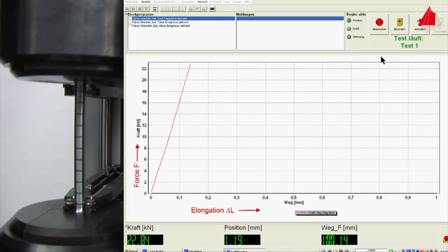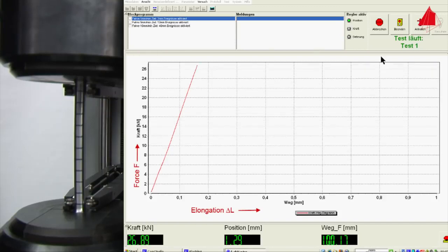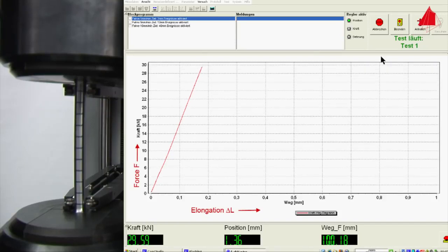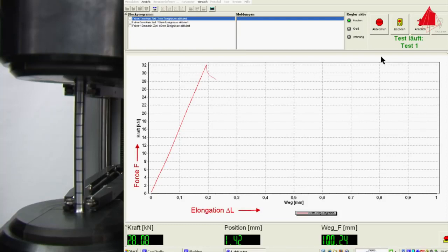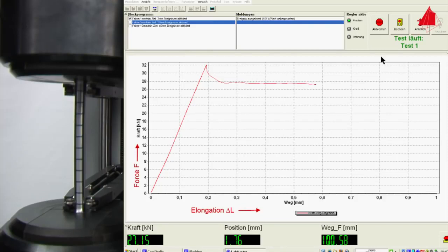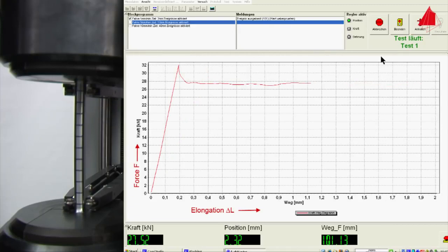In materials with yield point phenomenon, the end of the elastic area can be seen clearly. The plastic deformation starts abruptly and is accompanied by a sudden drop of force. If the test piece were to be unloaded now, it would not spring back to the original length but instead show a permanent elongation.